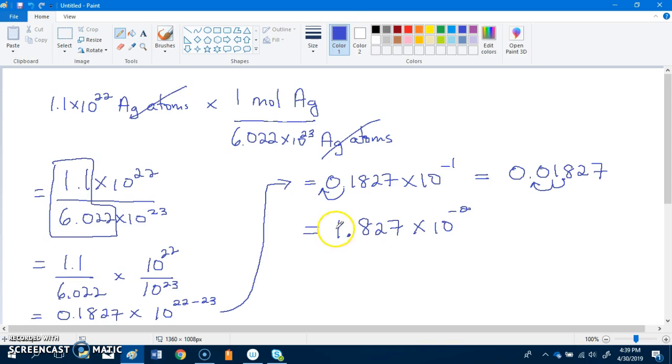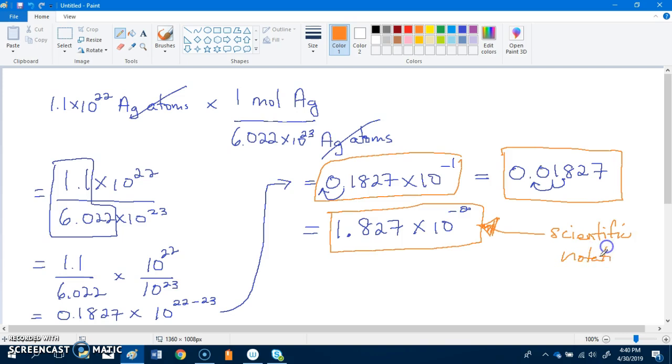All of these answers are the same, they are all correct, they all equal the same number. The reason why they want us to answer it this way is because they want us to put it in proper scientific notation, and proper scientific notation means you have to have a number greater than zero in front of the decimal.